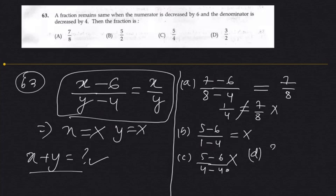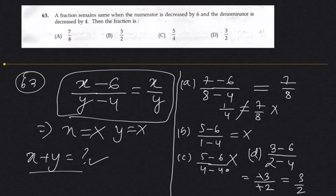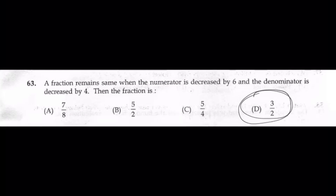So option D: 3 by 2. Numerator 3 minus 6 is minus 3, denominator 2 minus 4 is minus 2. That is minus 3 by minus 2, which equals 3 by 2. The option is the same as the original fraction. So the answer is D, 3 by 2. From 3 by 2, subtract 6 from numerator and 4 from denominator, and you get 3 by 2 again. 100% sure.